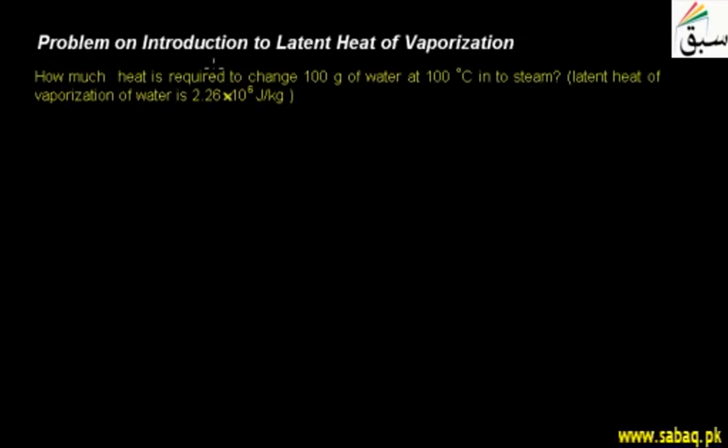Students, we will solve a problem on latent heat of vaporization. How much heat is required to change 100 grams of water at 100°C into steam? The latent heat of vaporization of water is 2.26 × 10^6 joules per kg.